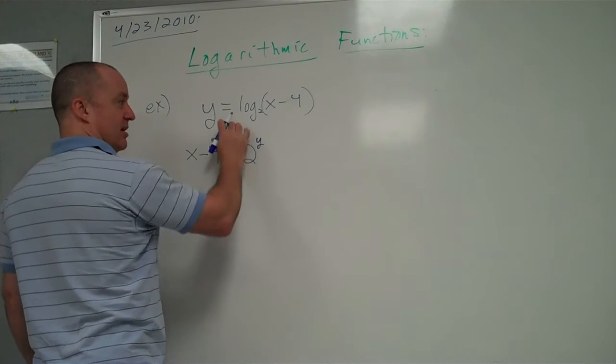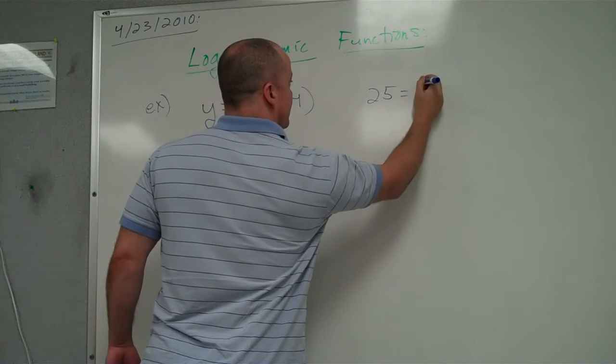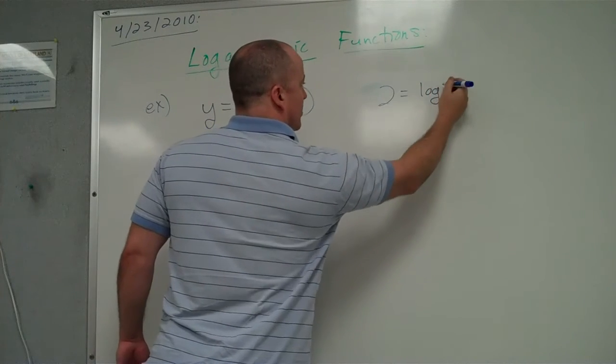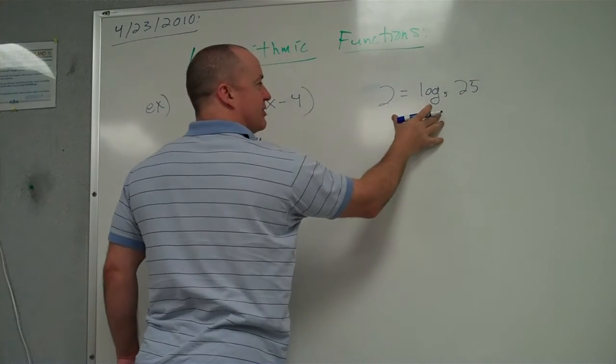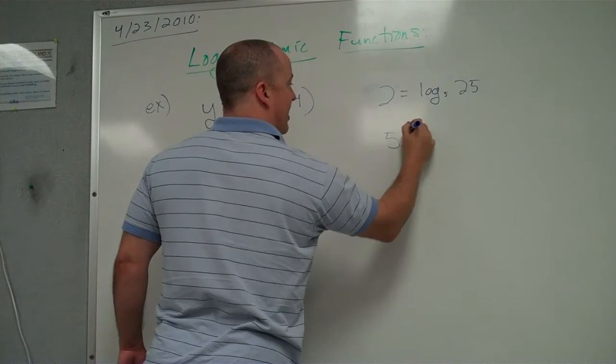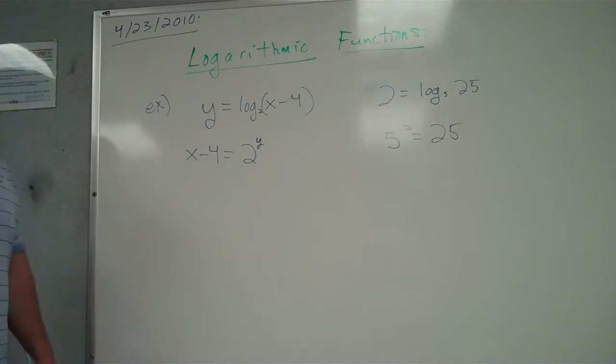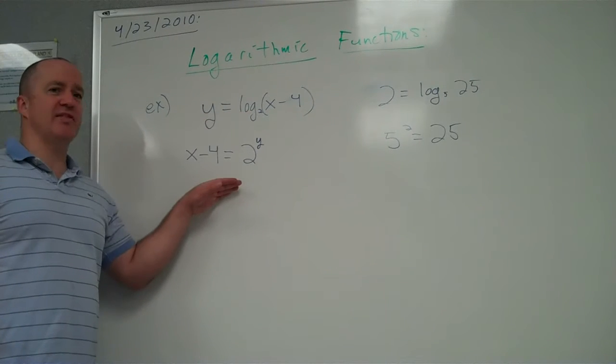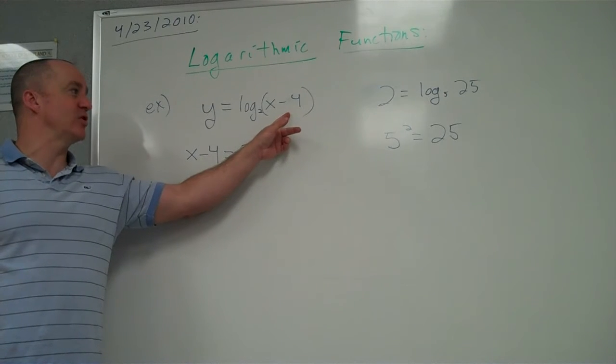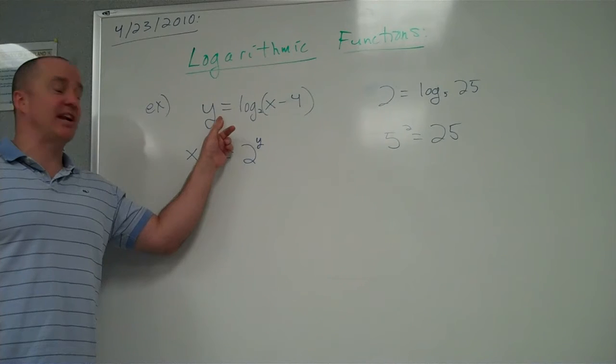This has to become the same thing in your brain as if I give you 25 equals 5. Whoops, I'm sorry, that's wrong. 2 equals log base 5 of 25. I hope most of you can fairly quickly now say, oh, this is the same thing as 5 squared equals 25. You've got to get just as quick at rearranging these things and not worry about the fact that it's an X minus 4 instead of a 25. It's still the answer.